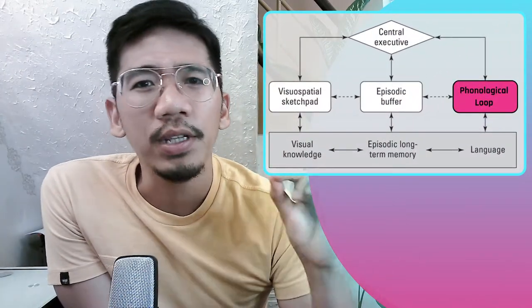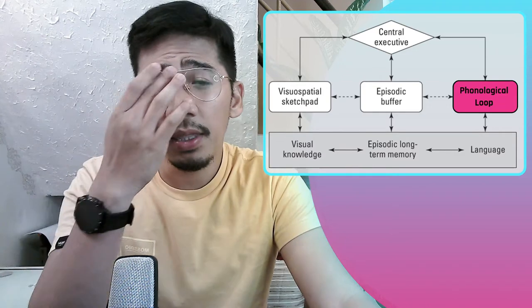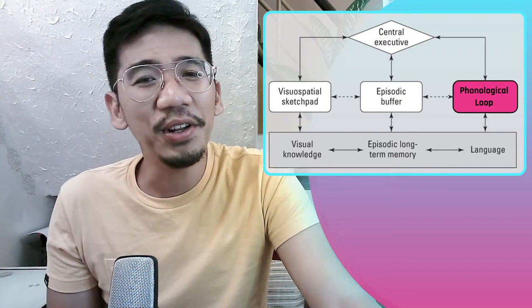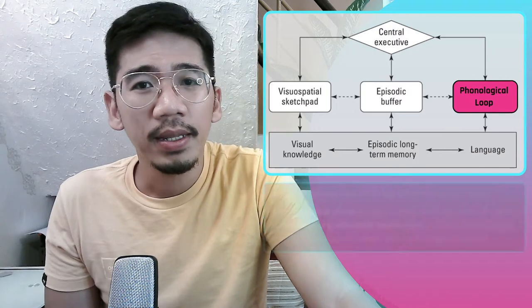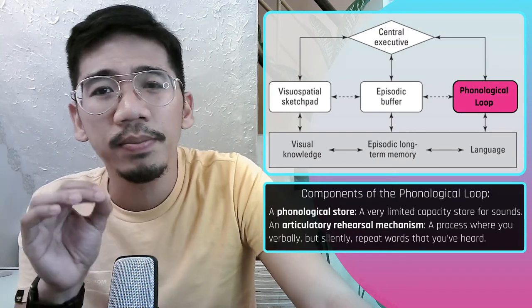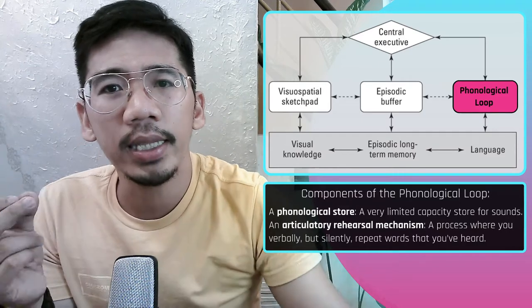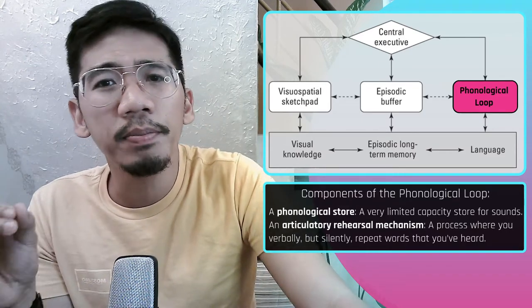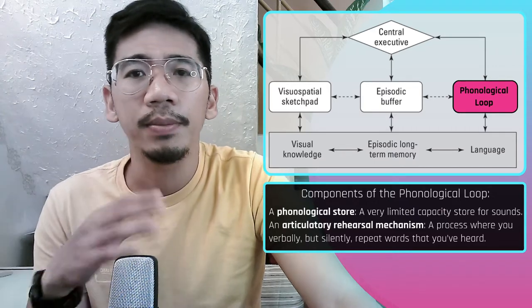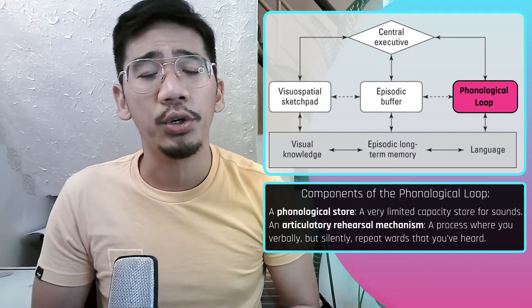The phonological loop is often described as the mind's ear — it's how people store and process sounds. Think of it as your inner voice. The phonological loop comprises two components: a phonological store, which is a very limited capacity store for sound usually associated with language; and an articulatory rehearsal mechanism, a process where you verbally but silently repeat words you've heard. Information stored in the phonological loop can only be held for a few seconds before decaying, and stored information can be displaced by new information.